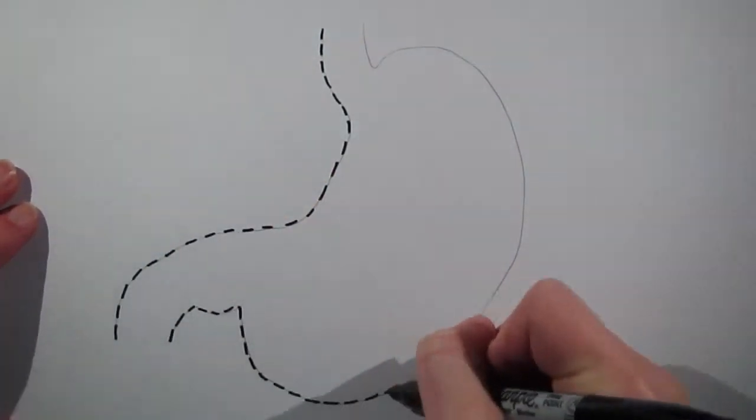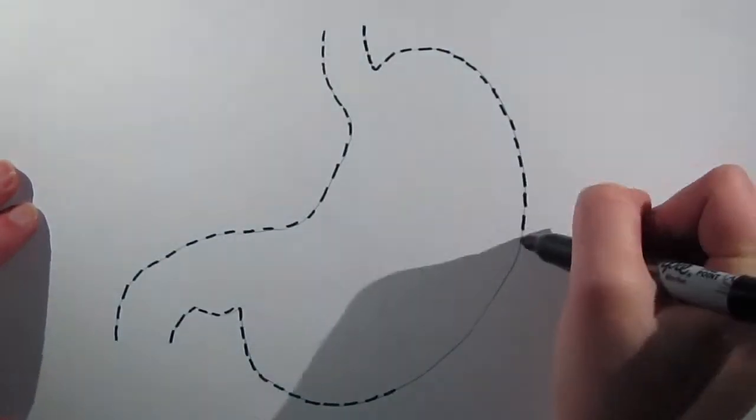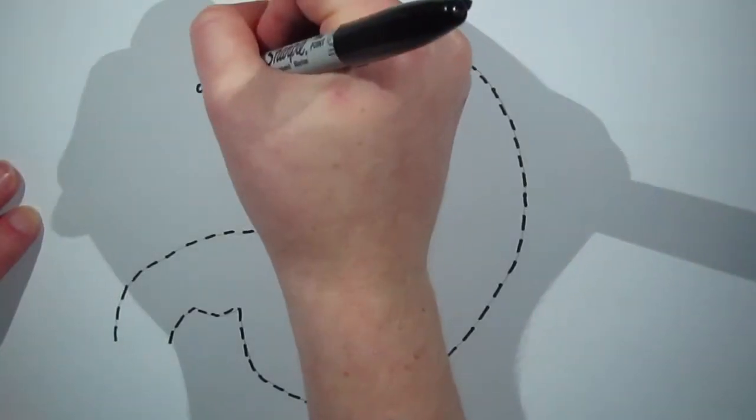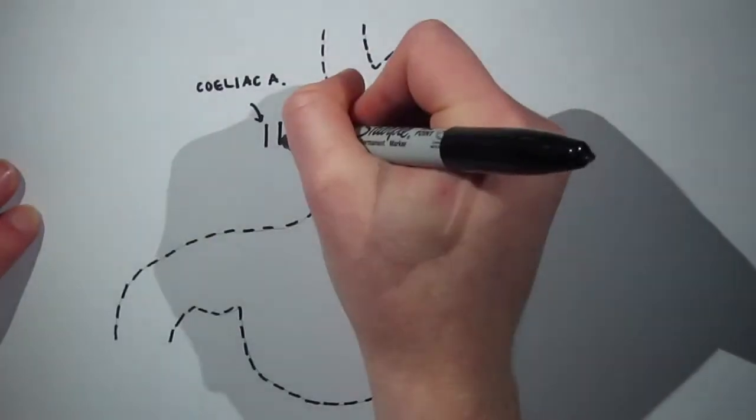There are five main arteries supplying the stomach, all of which arise from the celiac trunk, a branch of the aorta.